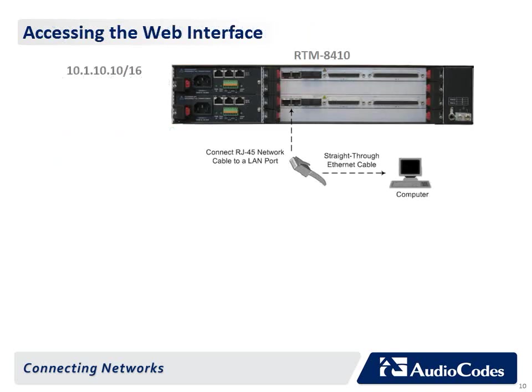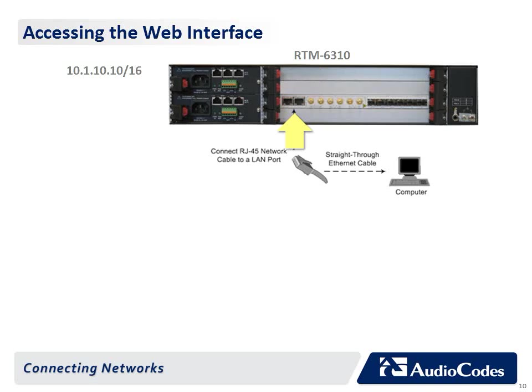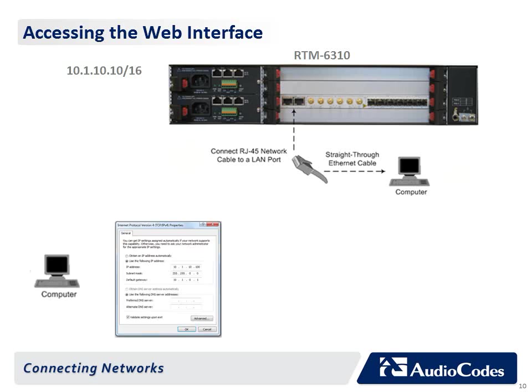To change the default IP networking parameters on your device using the web-based management tool web interface, do the following. Connect one of the Ethernet ports located on the RTM8410 or RTM6310 directly to the network interface of your computer using a straight-through Ethernet cable. Change the IP address and subnet mask of your computer to correspond with the default management IP address and subnet mask of the device. Access the web interface.